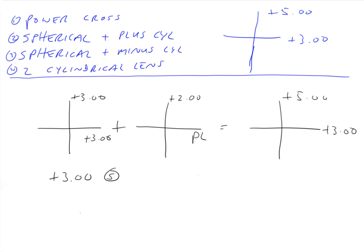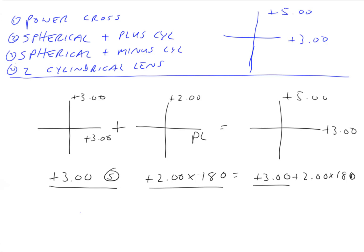So the plus three spherical lens is written this way. The cylindrical lens has a power of plus two, and the axis is where the plano is, so that's 180. The way we write this in plus cylinder is: plus three, plus two, axis 180. What these numbers mean is: plus three — that's the spherical lens; plus two axis 180 — that's the cylindrical lens. When you say plus three plus two axis 180, think to yourself what the numbers mean.